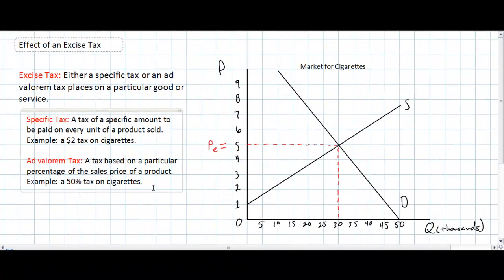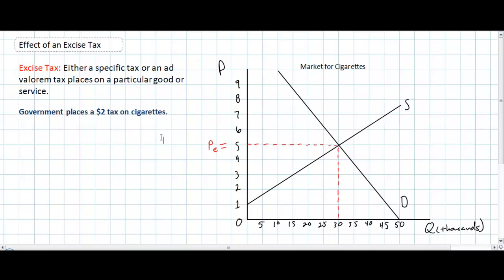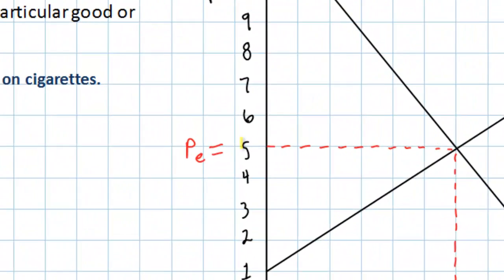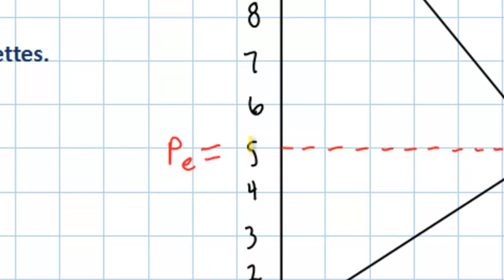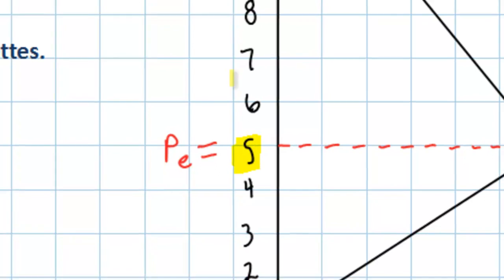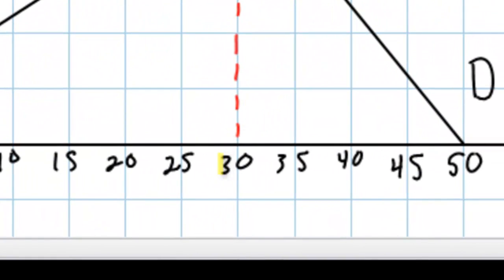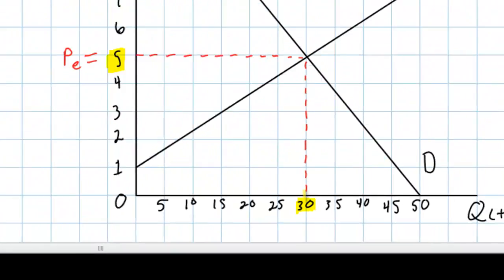In the graph on the right, we're going to be examining the impact of a specific tax on the market for cigarettes — what happens if the government places a $2 tax per pack. We have the demand for cigarettes, which is downward sloping, and the supply of cigarettes, which is upward sloping. Without any government intervention, the equilibrium price of cigarettes is $5 and the equilibrium quantity is 30,000 packs.